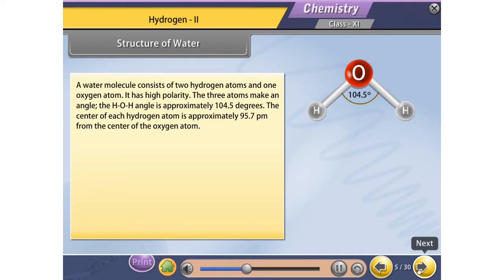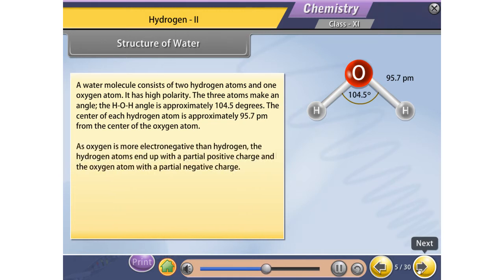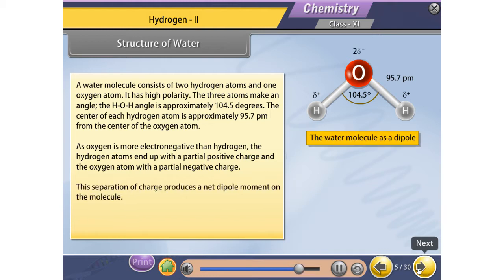The center of each hydrogen atom is approximately 95.7 picometer from the center of the oxygen atom. As oxygen is more electronegative than hydrogen, the hydrogen atoms end up with a partial positive charge and the oxygen atom with a partial negative charge. This separation of charge produces a net dipole moment on the molecule.